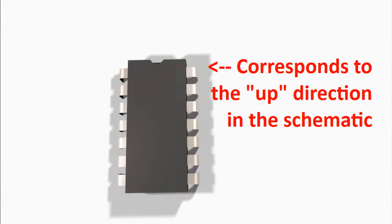An IC chip kind of looks the same whether you hold it this way or that way, and that is why they actually have that little notch cut into the chip itself. The notch is essentially the upward direction when you're looking at a schematic — it is almost always drawn at the top. So when you want to figure out which pins do what, you have to hold your chip in the correct direction by looking for where the notch is; it should be at the top, not at the bottom.